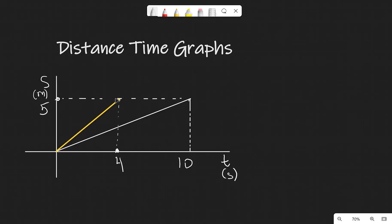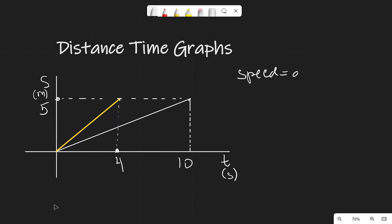The steeper the gradient, the higher the speed, and the less steep the gradient, the lower the speed. For the yellow line, which reaches 5 meters in 4 seconds, the speed equals the gradient: 5 over 4, which is 1.25 meters per second.